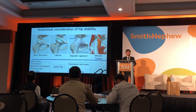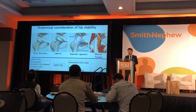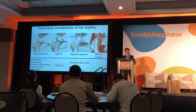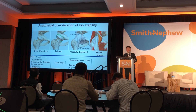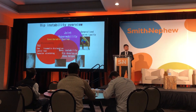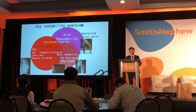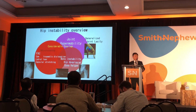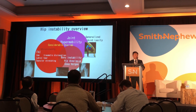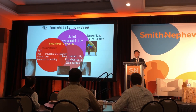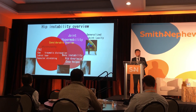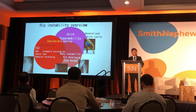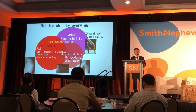This slide shows anatomical considerations of hip stability. The hip joint is a ball and socket joint, stabilized by bony structures and soft tissue including the labrum and capsular ligaments. Muscle tendons can also dynamically stabilize the hip joint. Hip instability is now recognized as a broad spectrum of conditions, with three main categories: joint hypermobility, bony instability including hip dysplasia and constrained ligaments and femoral torsion, and FAI, which recent studies have associated with micro-instabilities. These three conditions can considerably overlap.